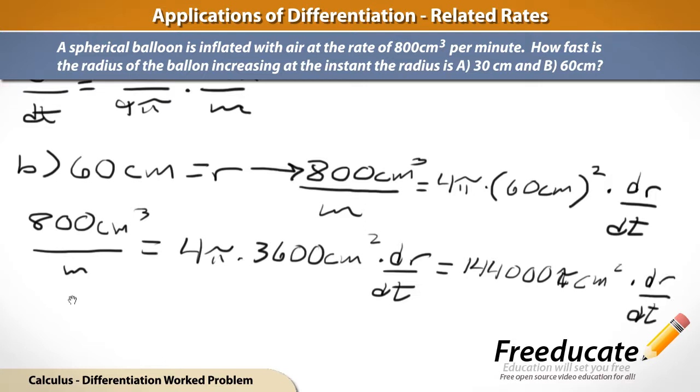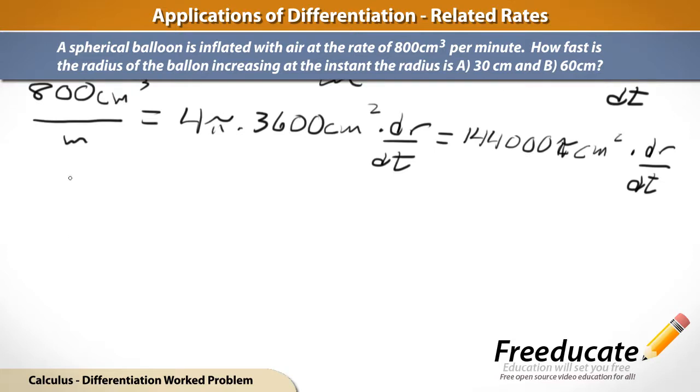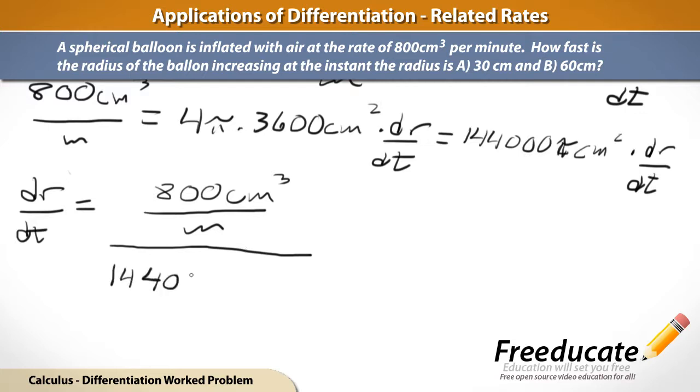So, now we almost have it. The last step is just to divide both sides of the equation by the part we don't need to solve for dr/dt. So, with that being said, dr/dt is going to equal 800 cubic centimeters per minute divided by 14,400 pi square feet. And that's going to equal, again, just using some rules of algebra to clean some fractions up. 800 cubic centimeters divided by 14,400 pi square centimeters times our minute.